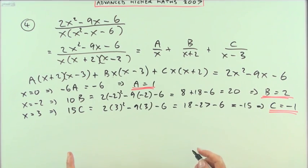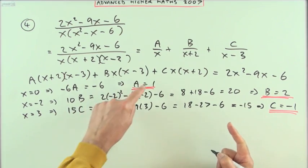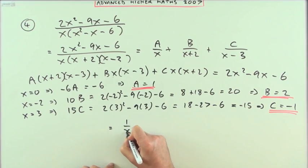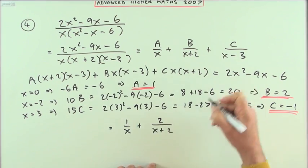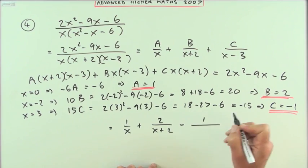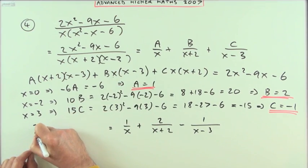So as far as the question was said, express that in partial fractions. What I've got is: 1 for A, so it's 1/x; 2 for B, so 2/(x+2); -1 for C, so I'll just put negative and then 1/(x-3). Or maybe I should put the original expression down.